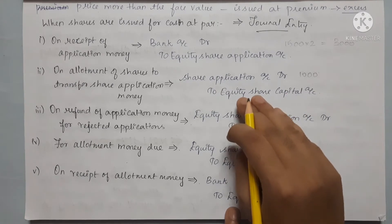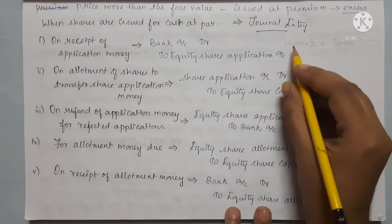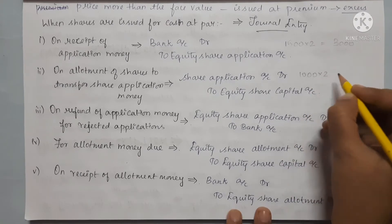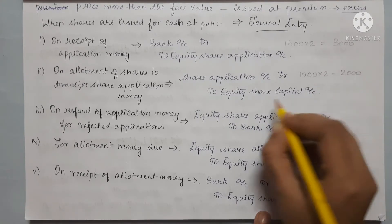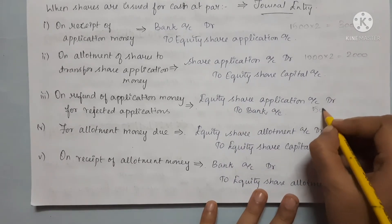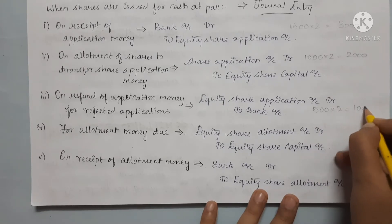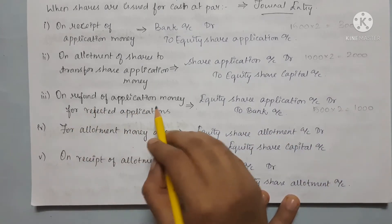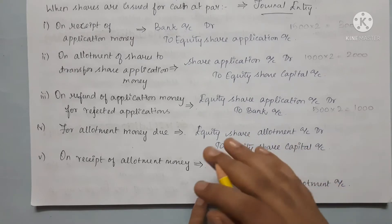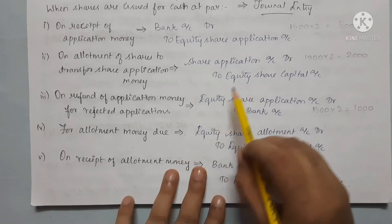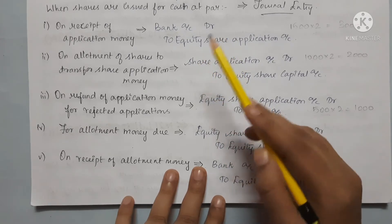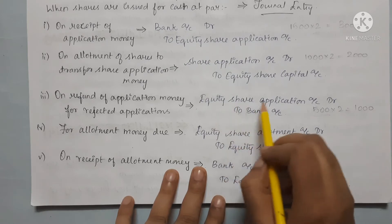We received the share capital for 1,000 allotments. The balance of 500 shares' application money — 1,000 rupees — must be repaid. We will refund the application amount for rejected applications. The journal entry: Equity Share Application Account debit, Bank Account credit — to refund the balance application money.